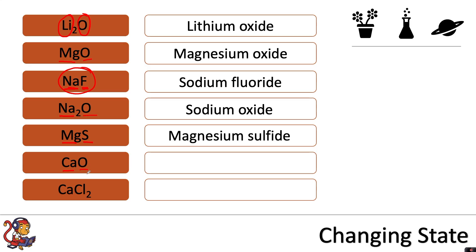Calcium here is bonding with oxygen to make calcium oxide, and finally calcium is bonding with chlorine to make calcium chloride.